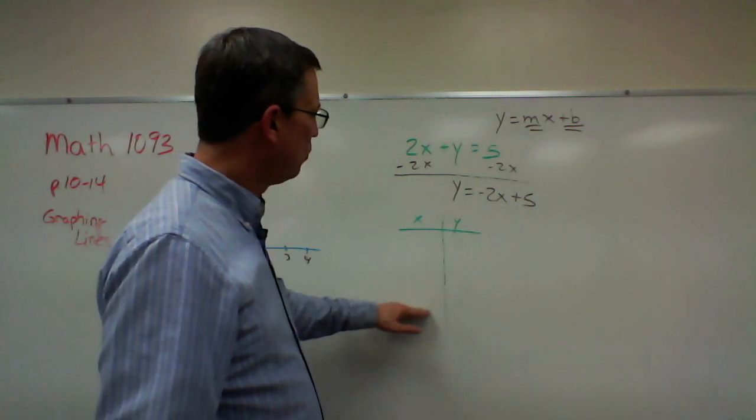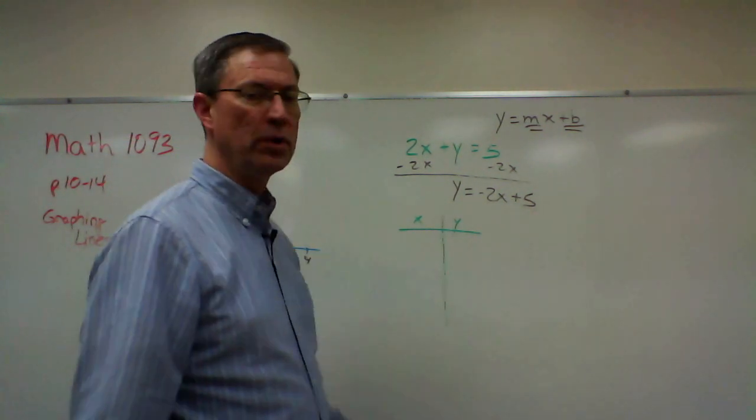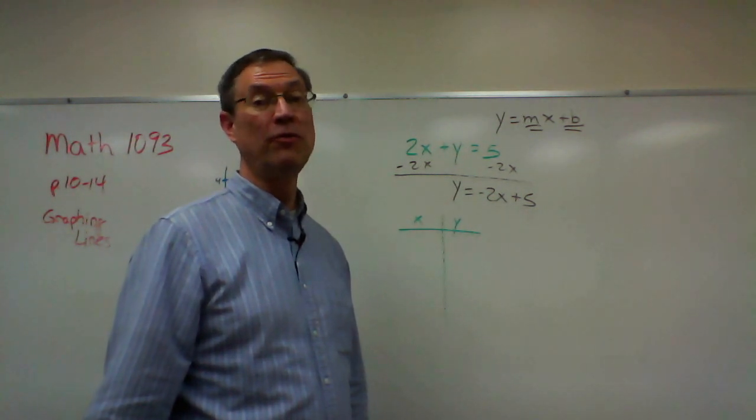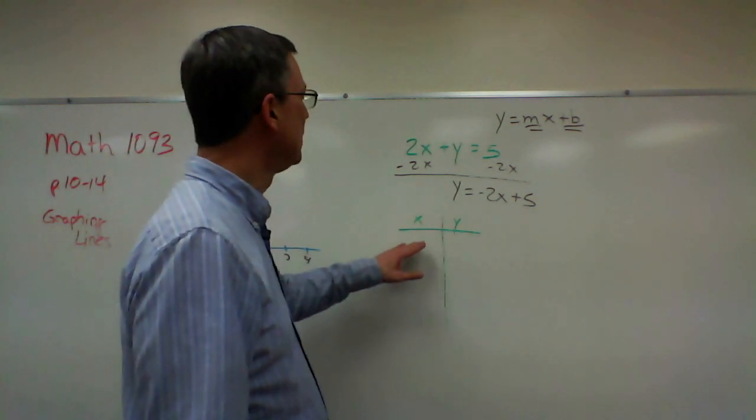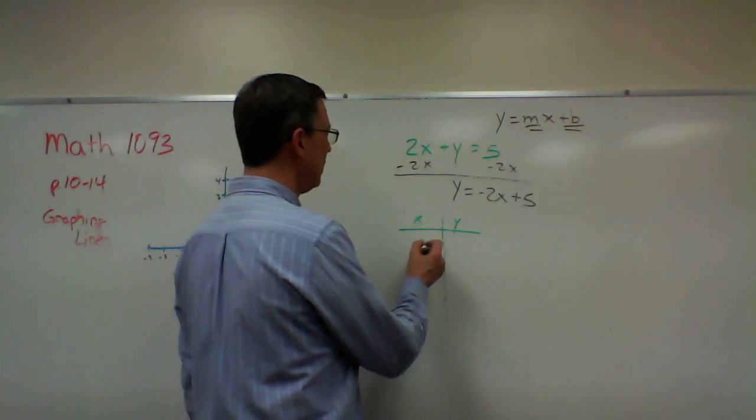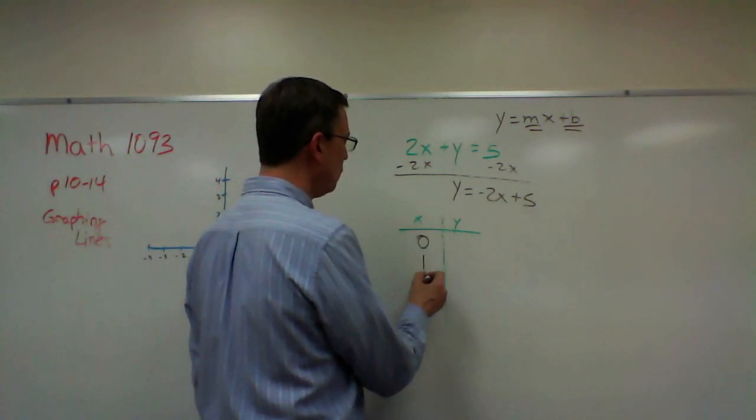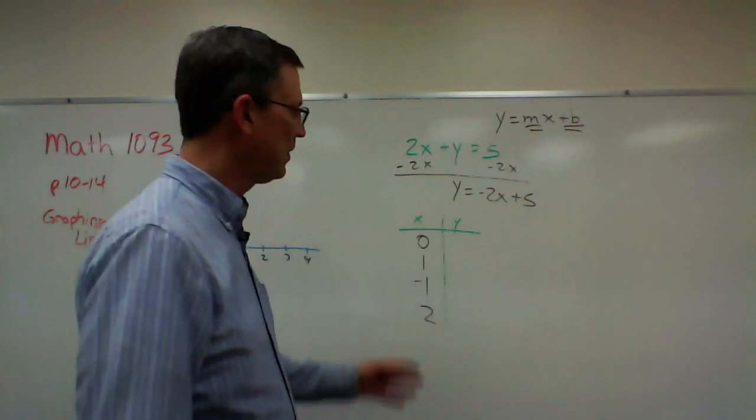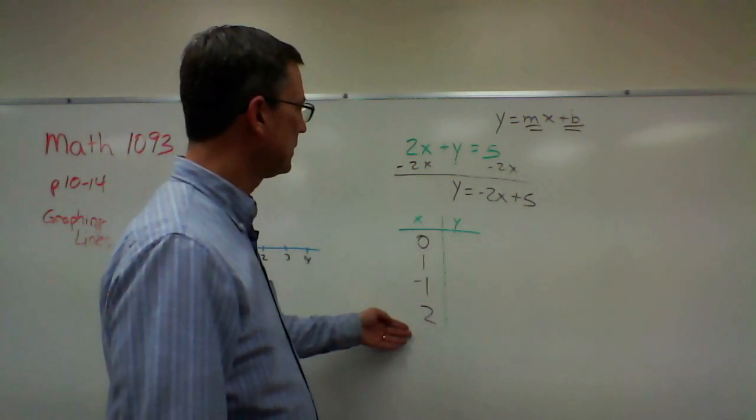Now we're going to plug in some points here, and you can put in as many as you want. I recommend at least three, preferably four, even five if you can. It's always a good idea to plug in zero. I like to do one and negative one, and then I'm going to go ahead and put in another one, two. So I've got four values for x.